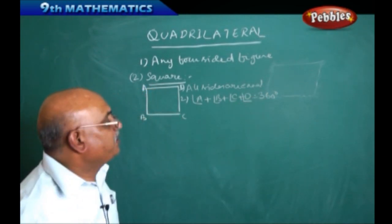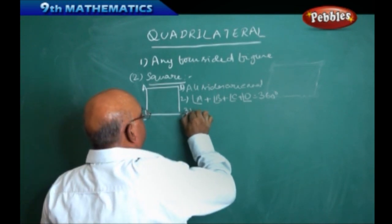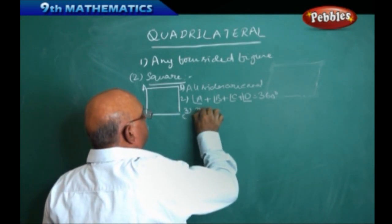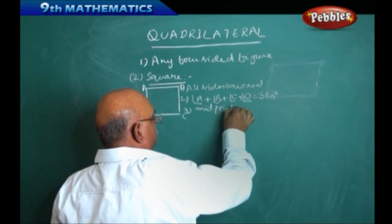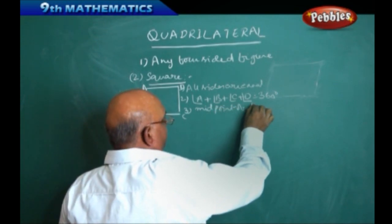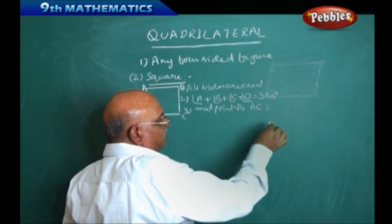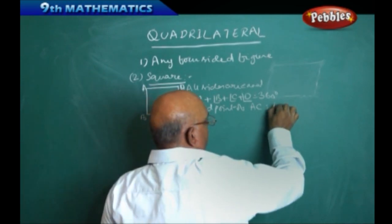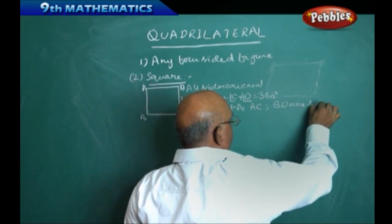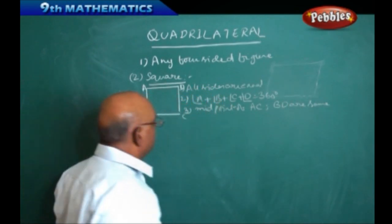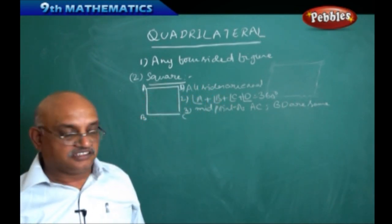The midpoint of the diagonals is the same — the midpoint of diagonal AC and diagonal BD are the same. That implies the diagonals are bisecting each other.